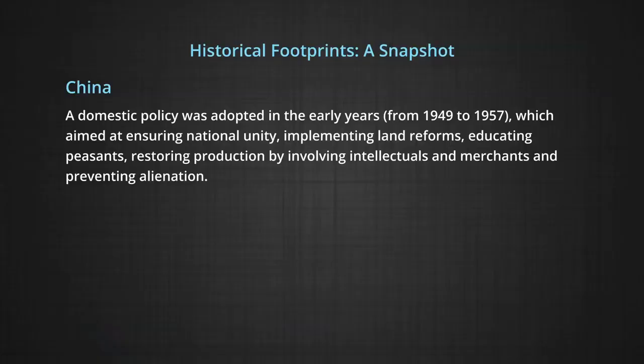Coming to the historical footprints, first we will talk about China. The establishment of the People's Republic of China in 1949 brought all critical sectors of the economy under government control, including enterprises and lands operated by individuals. A domestic policy was adopted in the early years, from 1949 to 1957, which aimed at ensuring national unity, implementing land reforms, educating peasants, and restoring production by involving intellectuals and merchants.